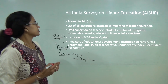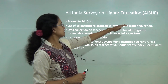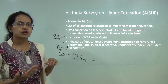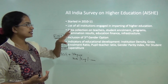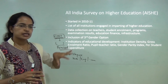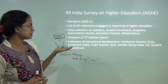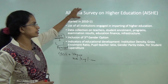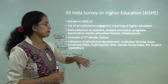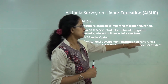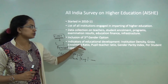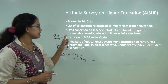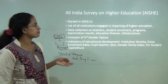The All India Survey on Higher Education (AISHE), started in 2010-11, lists all major institutes and collects data on students, teachers, infrastructure, and examination results. It has recently included a third gender option. Major development indicators incorporated include institutional density, gross enrollment ratio, pupil-teacher ratio, gender parity, and per-student expenditure.